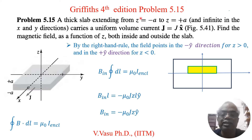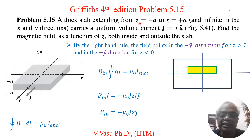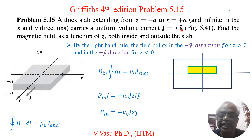Today we will solve problem 5.15 from Griffiths 4th edition Introduction to Electrodynamics. Problem 5.15 involves a thick slab extending from Z equal to minus A to Z equal to plus A, infinite in the XY direction, carrying a uniform volume current J equal to J x-hat, that is current flowing in the X direction. Find the magnetic field as a function of Z both inside and outside the slab.